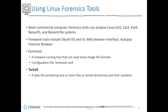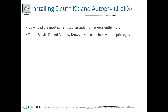The same goes for Linux. Most commercial tools are used to analyze Linux EXT2, EXT3, and EXT4, as well as other variations of common Linux structures. There are also freeware tools like the Sleuth Kit with its web browser interface, Autopsy. There are also tarballs — data files containing one or more files or whole directories and their contents — similar to but not identical to a compressed zip file.